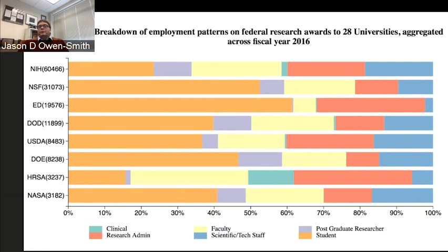We can also break this down by federal funding agency, which is important to note because different funding agencies have different missions and researchers working with funding from different agencies tend to rely on different mixes of workforce. So you can talk about the ways in which a particular portfolio or area of research is more or less involved, for instance, with the training of students.